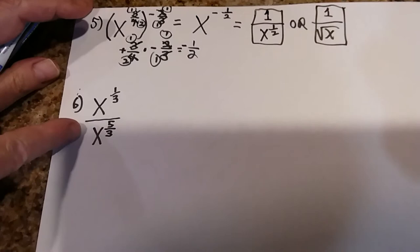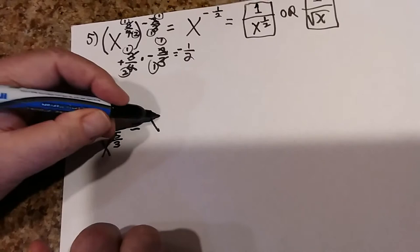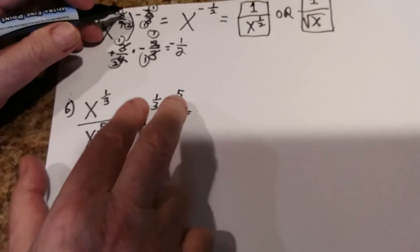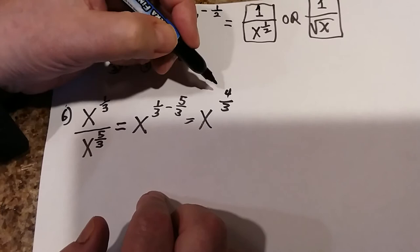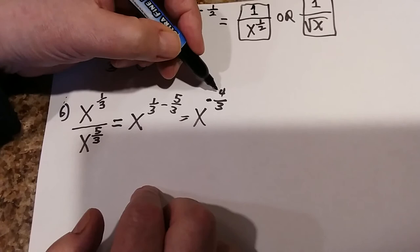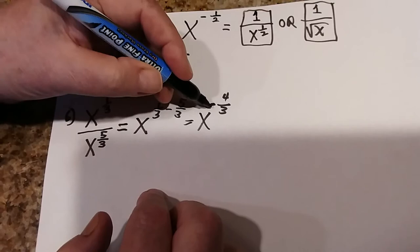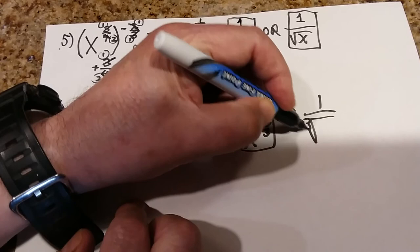The last example uses division. Remember when you divide exponents, you copy the base and subtract the top exponent minus the bottom. This gives x to the 1 third minus 5 thirds. Since the denominators are the same, keep the denominator 3 and do 1 minus 5, which is negative 4. To remove the negative exponent, write 1 over x to the positive 4 thirds. In radical form, that's 1 over the cube root of x to the fourth power.